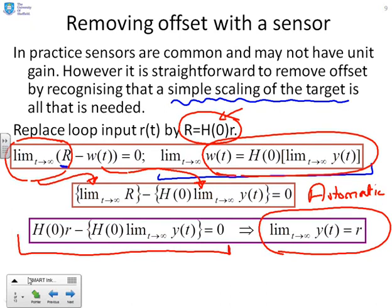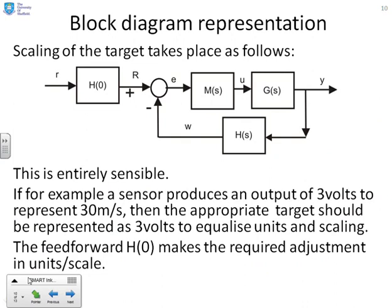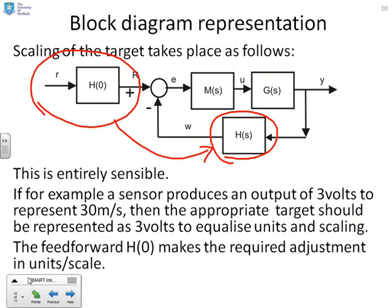Here's a block diagram to show what we've done. All that's required is to add a feed forward compensator with gain H of 0. Notice there's a nice symmetry: H of 0 matches the sensor in the return path. An example of why this makes engineering sense: you may have a sensor measuring meters per second, but the sensor output could be in volts. Therefore, logically, the summing junction should be comparing volts with volts. What the feed forward H of 0 does is make the required adjustment to the units and scale of the target, so you're comparing like with like.